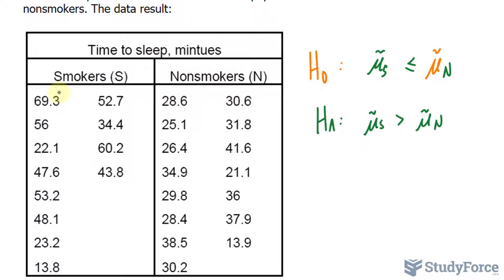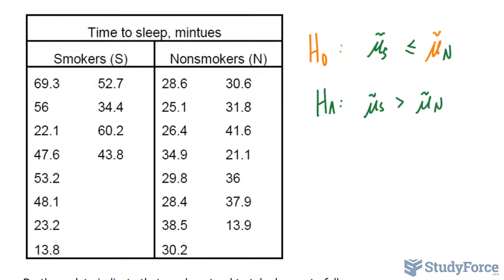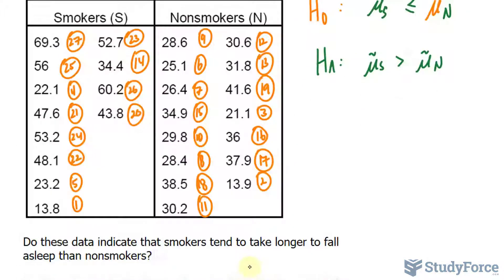When it comes to the Wilcoxon rank sum test, we have to pool all of this data together and rank it from lowest to highest. Now, of course, that's going to take some time to do. I won't show you in real time, but this is the rank that you should end up with. Okay, I've gone ahead and written down all the ranks. Notice that this is ranked one and the largest one is 27. I'm just pointing that out for reference sake.